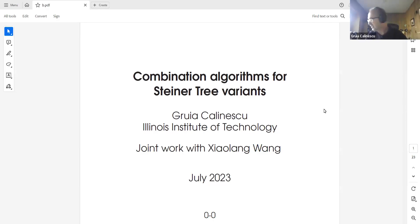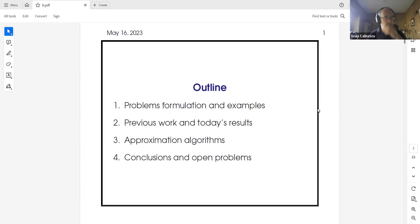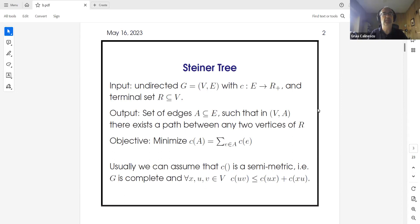It is eight o'clock and four minutes right now. Thank you everybody. So this is an approximation algorithm for the Steiner-Tree problem, joint work with Xiaolang Wang who did this as part of his PhD thesis. I will define the problems and then tell you what we achieve compared to previous work, talk a little bit about our algorithms, and conclude with what is left to be done.